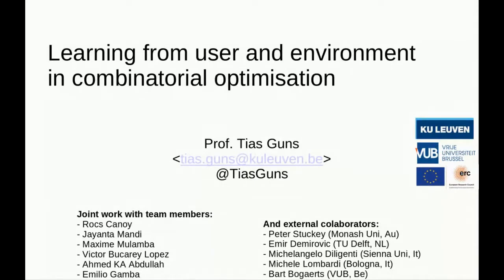Good afternoon everybody. Welcome back to the online seminar series Machine Learning Needs Mathematical Optimization. Today we have the pleasure of having Thias Gans. Thias has a PhD from the Catholic Universitat Leuven, then moved to the Freie Universitat from Brussels, and is nowadays back at KU Leuven where he has an ERC consolidator grant. He has published across machine learning and operations research journals and received many awards including one on his dissertation.